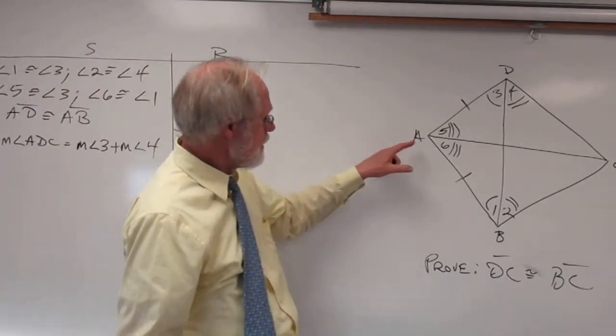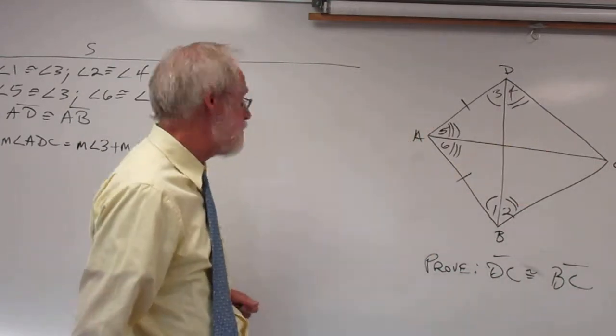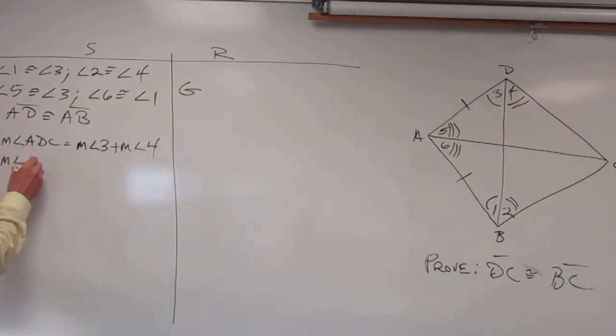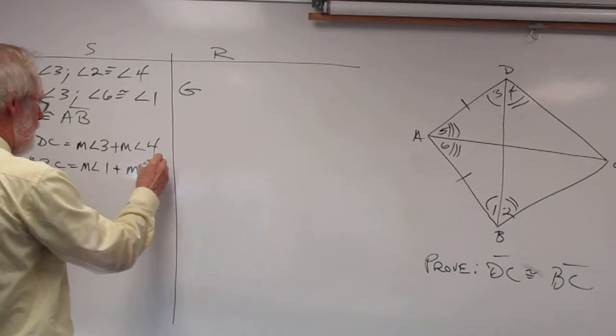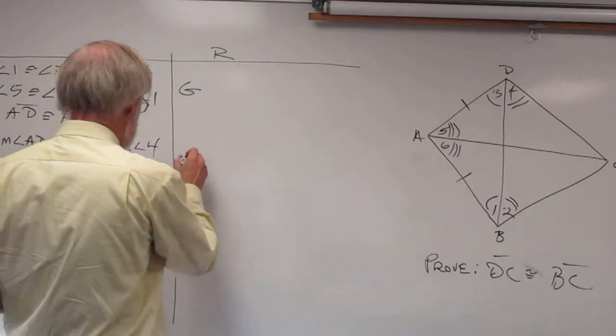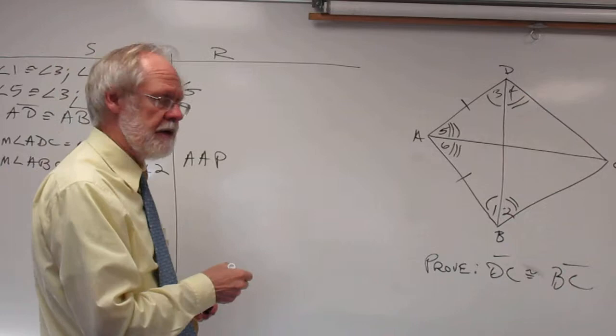And let's do the same thing down here. The measure of angle ABC is equal to the measure of angle 1 plus the measure of angle 2. And all of that is the angle addition postulate.